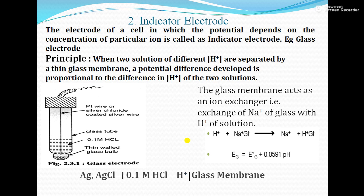Next is the indicator electrode. An indicator electrode is the electrode of the cell in which the potential depends on a particular ion concentration. For example, the glass electrode — the potential of the glass electrode is dependent on the H⁺ ion concentration.